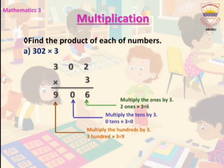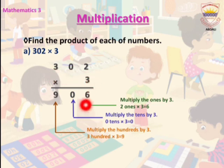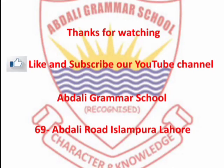Finally, we multiply the 100's by 3. 3 is at the 100's place; 3 multiplied by 3 is 9. We write 9 at the 100's place. When we multiply 302 by 3, we get our product: 906. Thanks for watching.